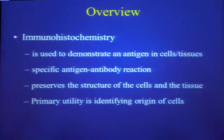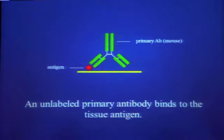Immunohistochemistry is used to demonstrate an antigen in cells or tissues, which is really a specific antigen-antibody reaction that preserves the structure of the cells and tissue, and its primary utility is identifying origin of cells. That's a really important point to remember, because especially in dermatopathology, this point is lost.